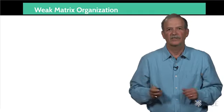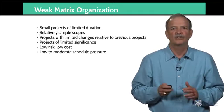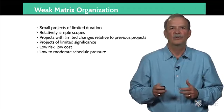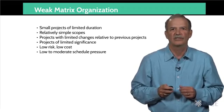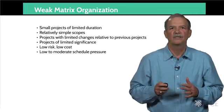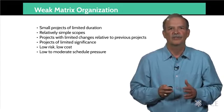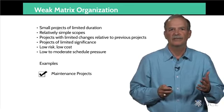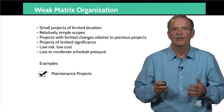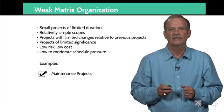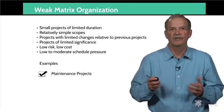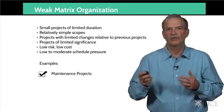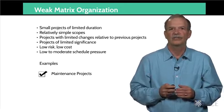The weak matrix organization. Projects executed in a weak matrix organization tend to be small projects of limited duration. They tend to be relatively simple with few changes in execution approach or scope relative to projects typically undertaken by the organization. Like the functional-based projects, they tend to be low-cost and low-risk in nature with moderate schedule pressure. Example projects might include maintenance projects — an example might be a minor pump repair. Each department manages its portion of the work, but it's all coordinated by one engineer. The electrical group disconnects the pump from the power, the piping group disconnects it from the piping, and the mechanical group makes repairs. The process reverses itself and everything is put back together, all under the direction of the unit engineer.